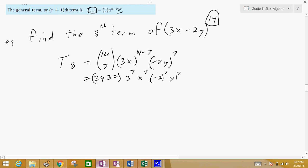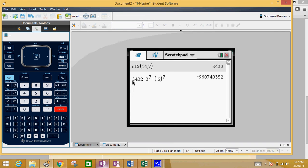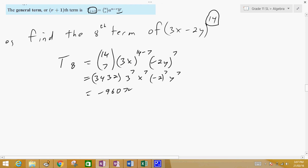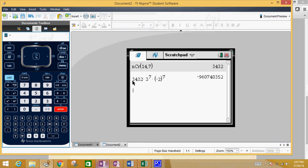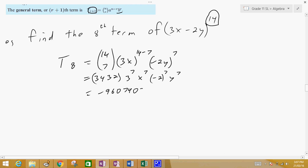So, that's negative 960,740,740,352. And don't forget, we need your x to the power of 7, y to the power of 7. So, this would give you the 8th term.